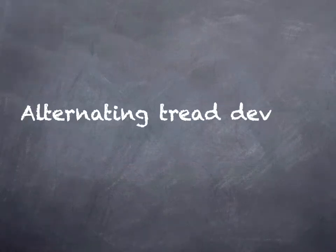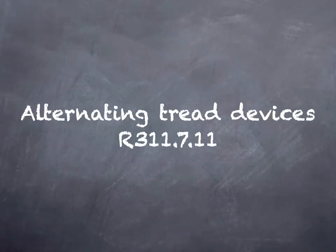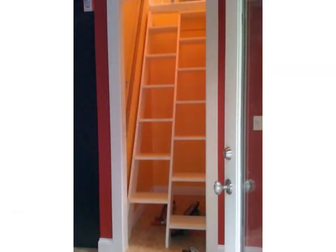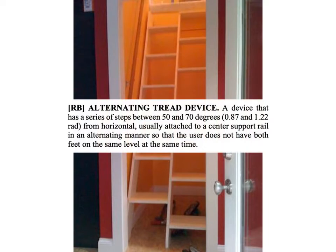Now, speaking of wacky, let's move on and talk about alternating tread devices. That's these things, and you can find lots of curious variations on Pinterest. There's a definition for these in Chapter 2, and you can pause and take a read. But the real details are in Chapter 3.